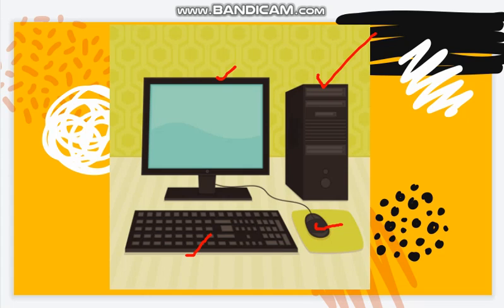So what are the software components? Software can be seen but cannot be touched. Like the programs in your monitor — it can be VLC, Email, and Google. These all are software. You can only see them but can't touch them.